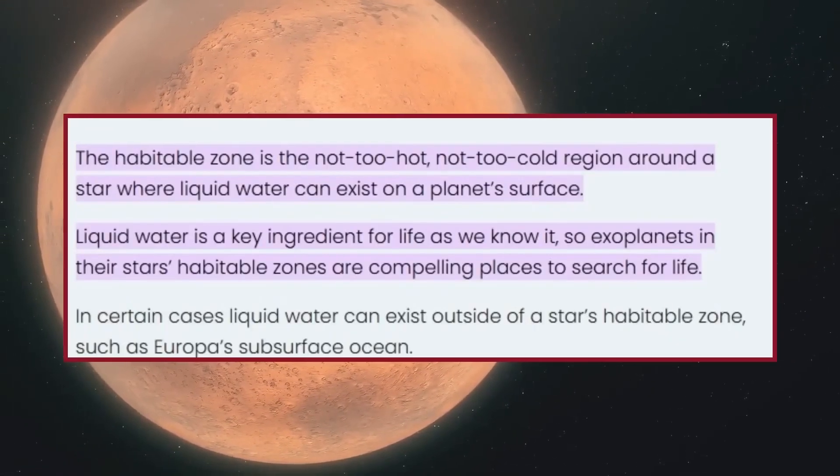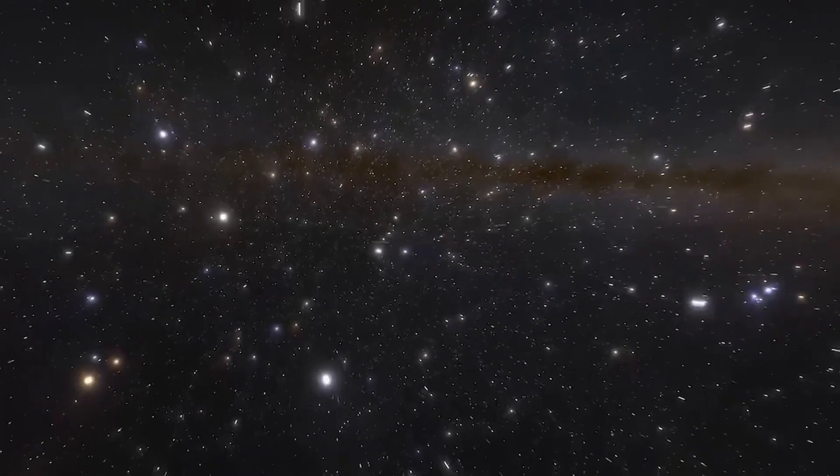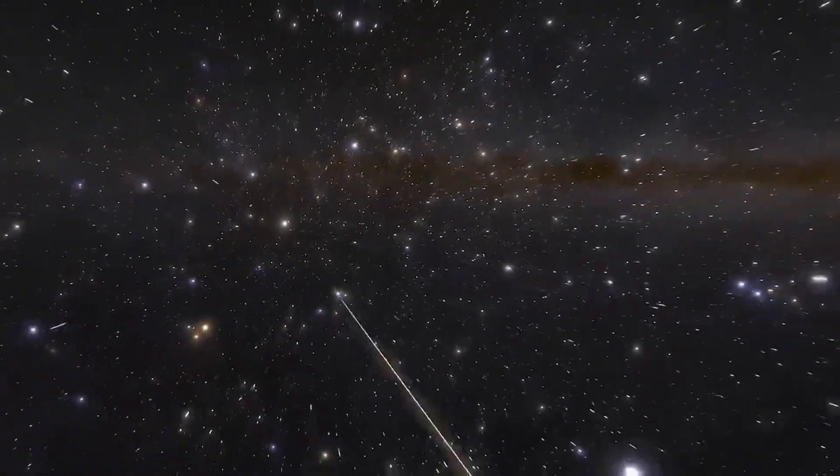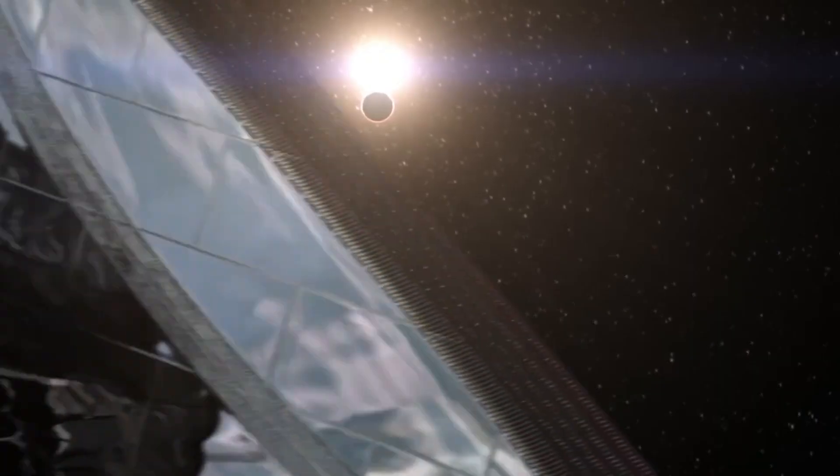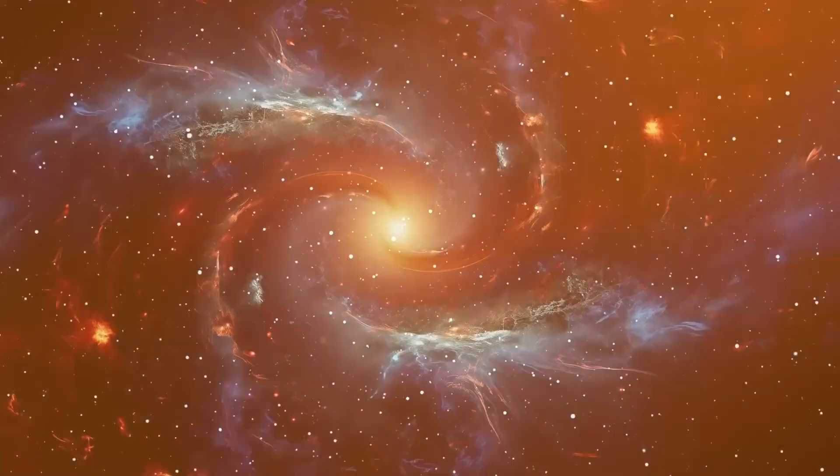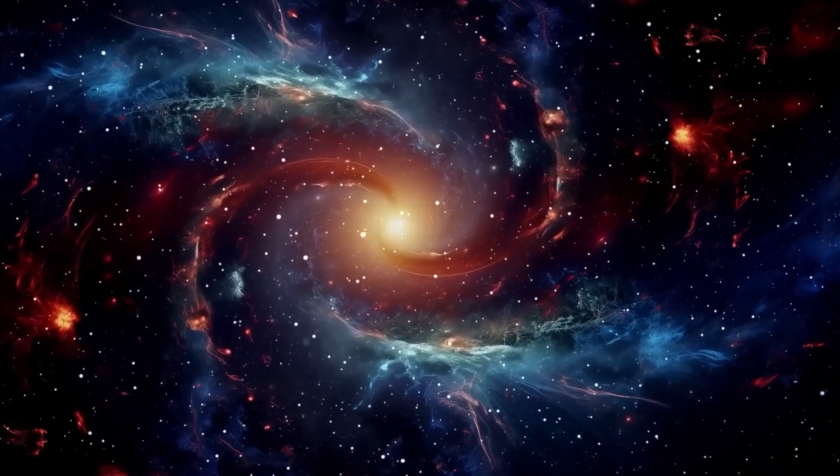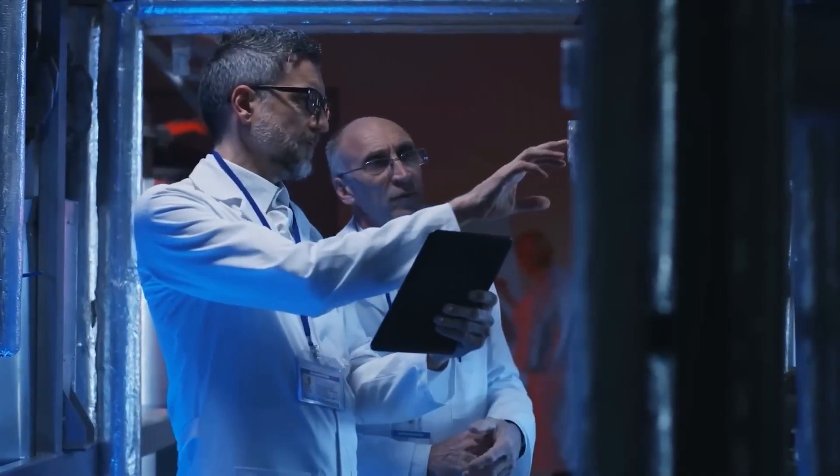Proxima Centauri itself is much smaller and cooler than our sun, which has both advantages and challenges for planets orbiting it. Red dwarfs like Proxima Centauri are known for their longevity, burning for trillions of years compared to the sun's estimated 10 billion-year lifespan. This extended lifespan provides planets orbiting such stars a much longer period to develop and sustain life, given the right conditions. However, red dwarfs also present hazards, including intense stellar flares that could potentially strip away a planet's atmosphere or disrupt conditions necessary for life.